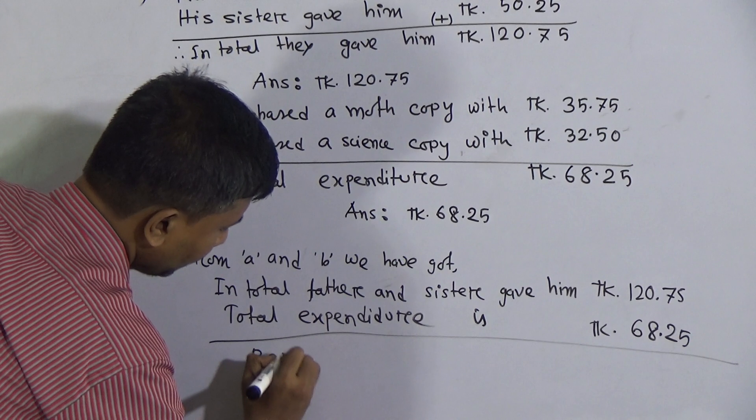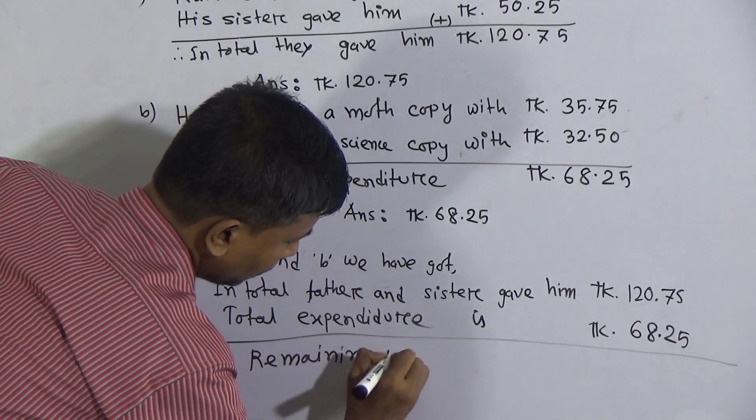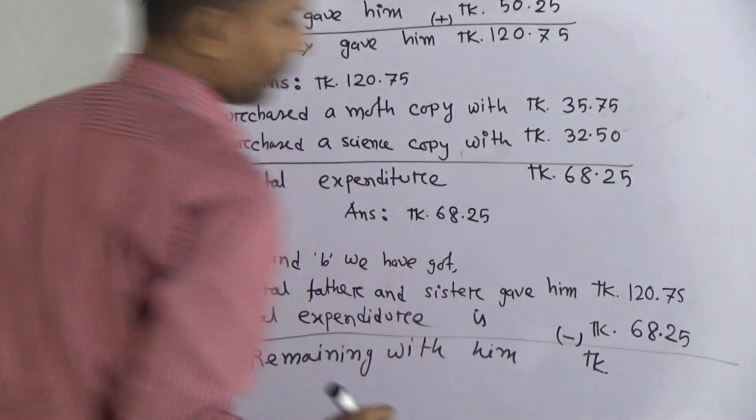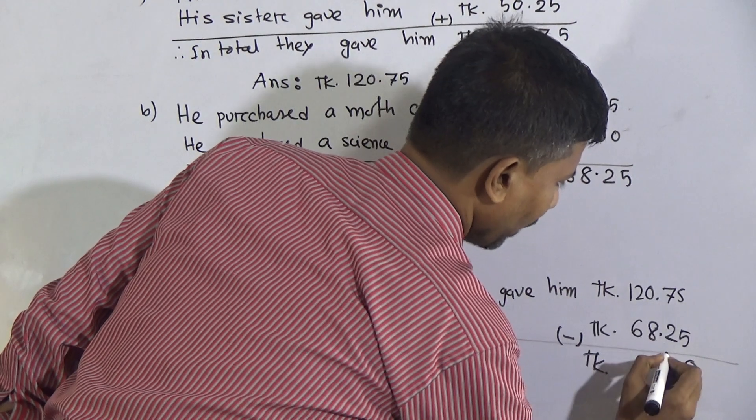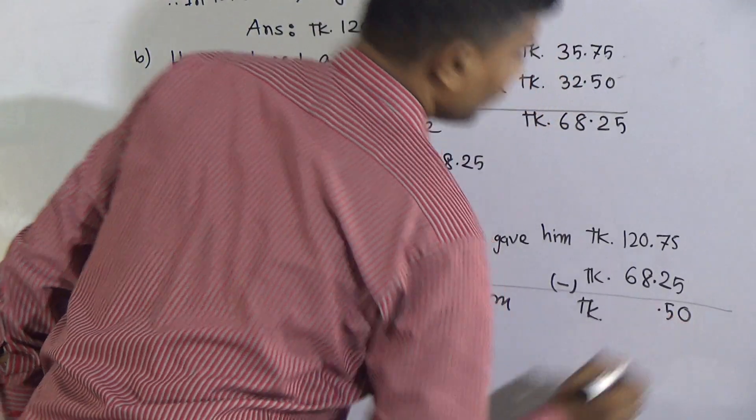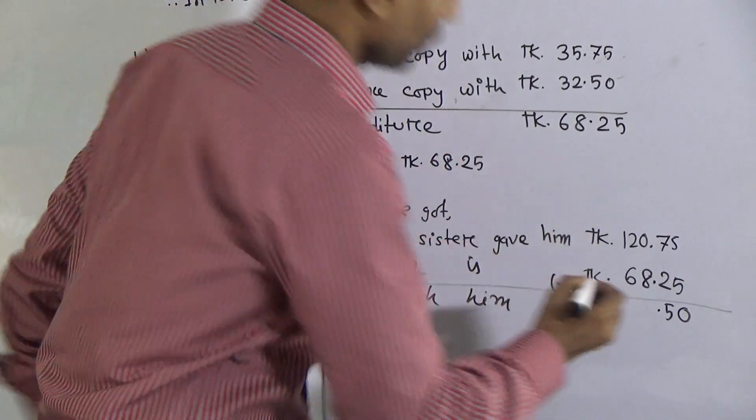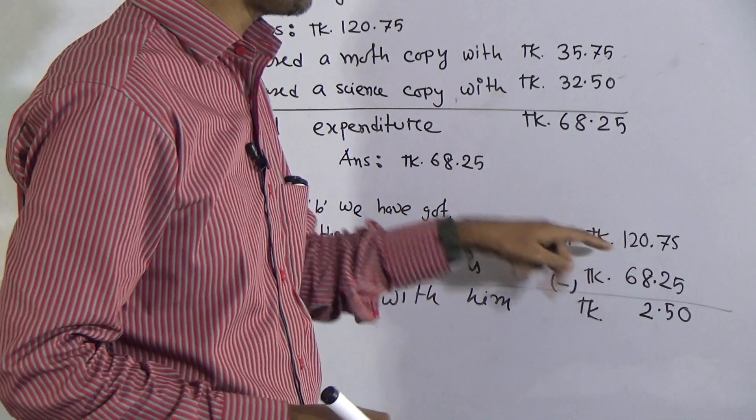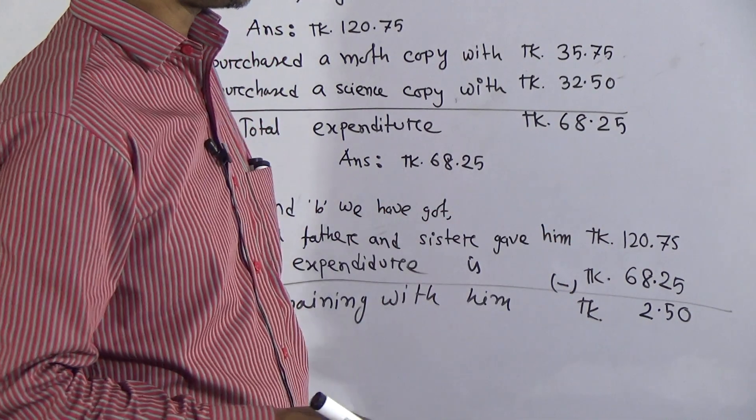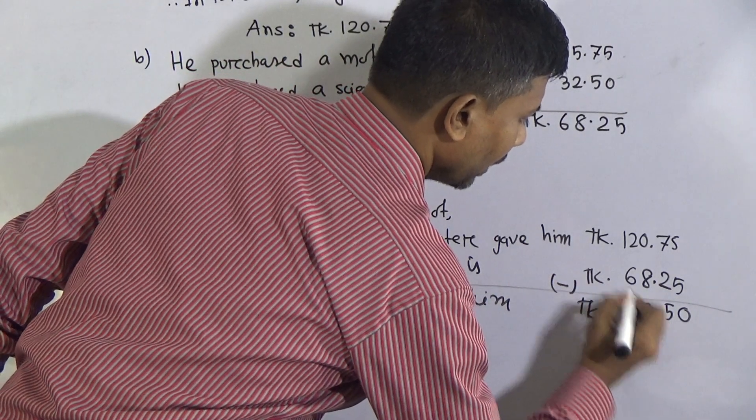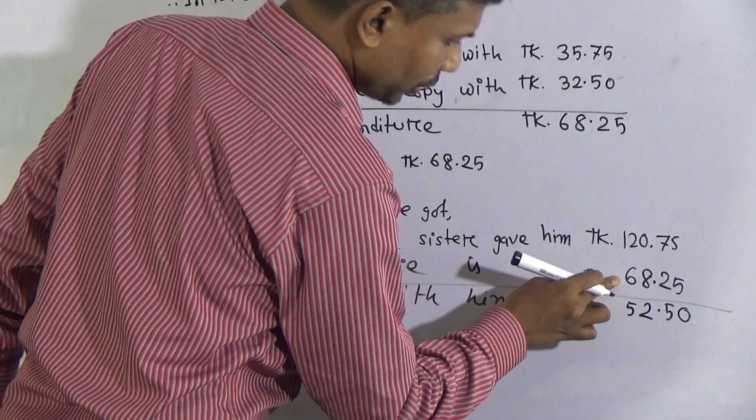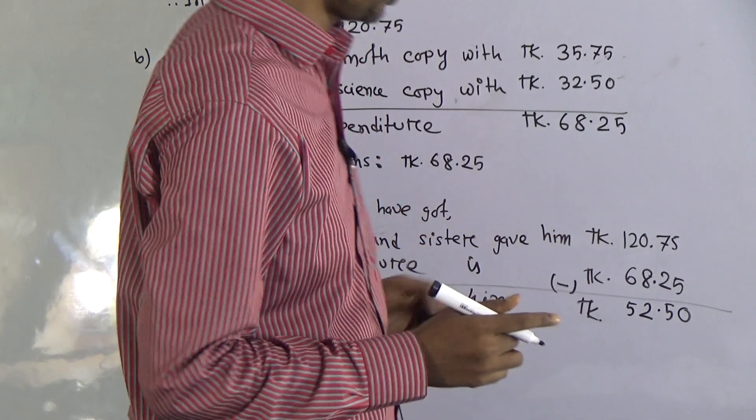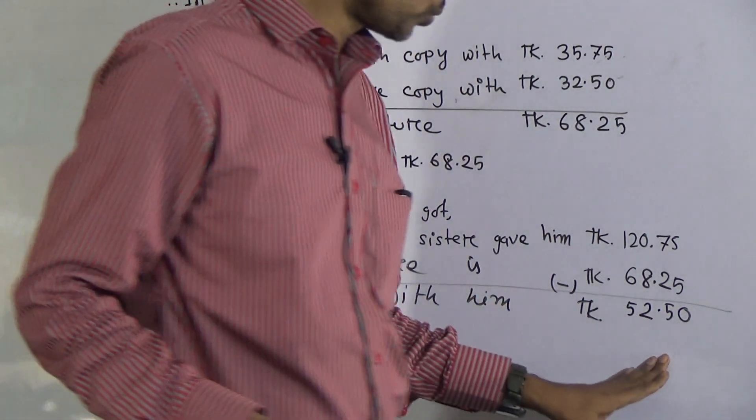Remaining with Rahim, this is subtraction. 5 minus 5 equals 0, 7 minus 2 equals 5, put decimal point. 0, that means 10, 10 minus 8 equals 2, and you have 1 in your hand. 1 plus 6 equals 7. Now subtract 7 from 2 means 12, 12 minus 7 equals 5. And you have 1 in your hand, 1 plus this 0 is 1, now subtract 1 from 1, that means 0. That means remaining with him is 52.50 taka.